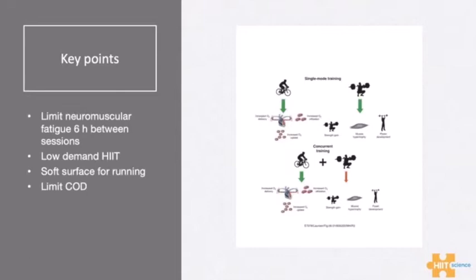For example, you could have a bike HIT session placed before a strength training session, as opposed to a team sport drill with lots of changes of direction that elicit a lot of neuromuscular fatigue. You'd want more of the bike session before strength training as opposed to the one with high changes of direction. Does that make sense?